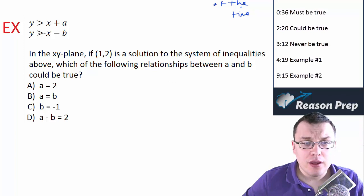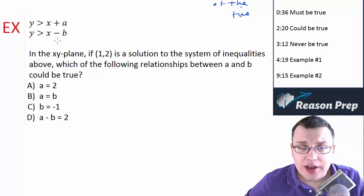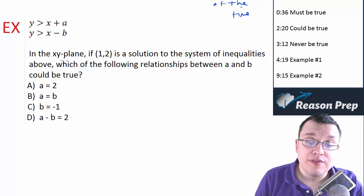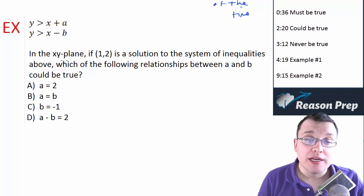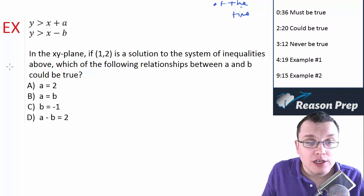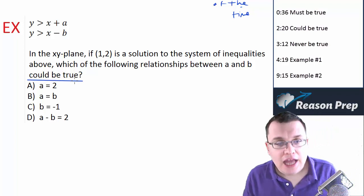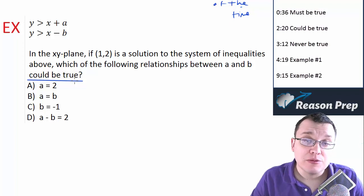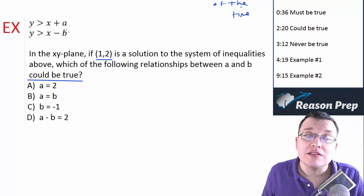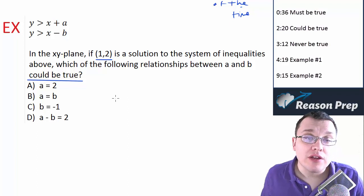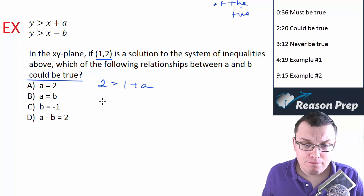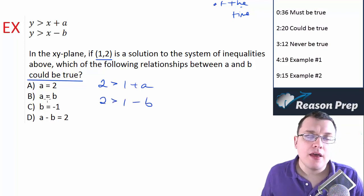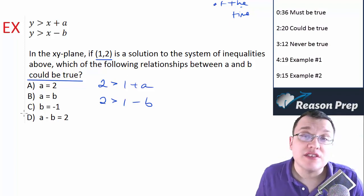Let's see an example. Y is greater than x plus a, y is greater than x minus b. In the xy-plane, if (1, 2) is a solution to the system of inequalities above, which of the following relationships between a and b could be true? Since we're given a point, let's plug in: 2 is greater than 1 plus a, and 2 is greater than 1 minus b.